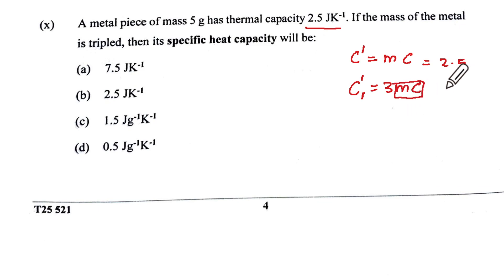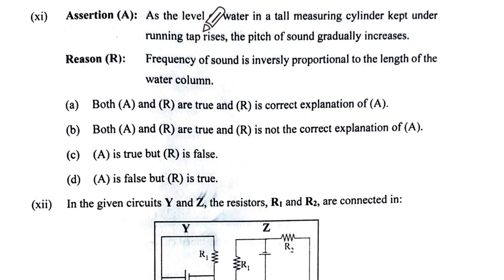Assertion: As the level of water in a tall measuring cylinder kept under the running tap rises, that means air column decreases. The pitch gradually increases is correct because frequency is inversely proportional to the length of the water column is correct. Both true and it is the correct explanation, so A.